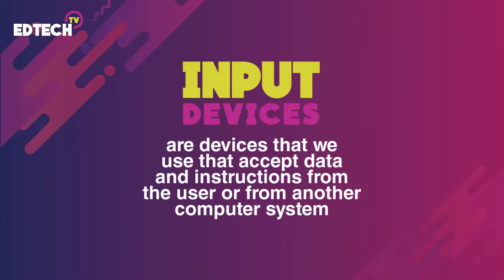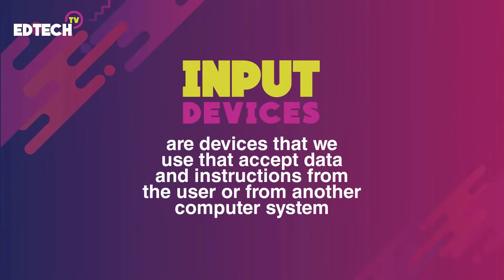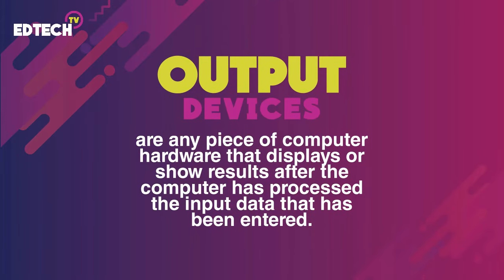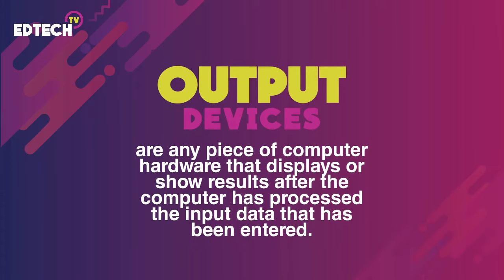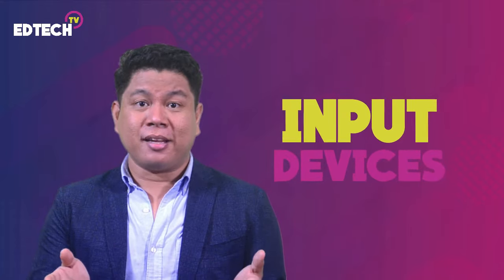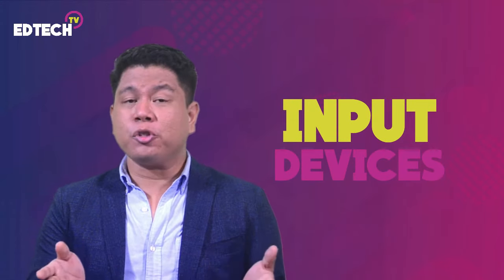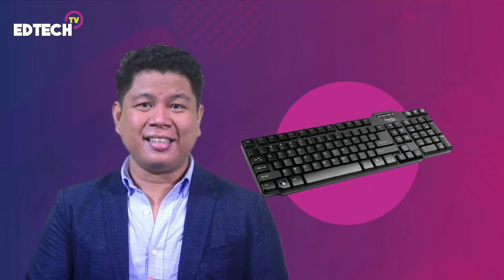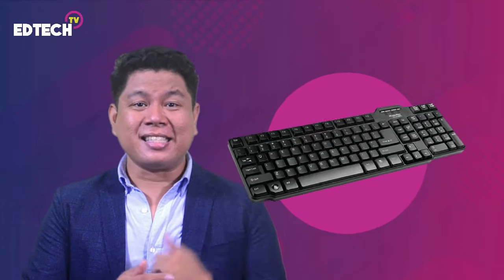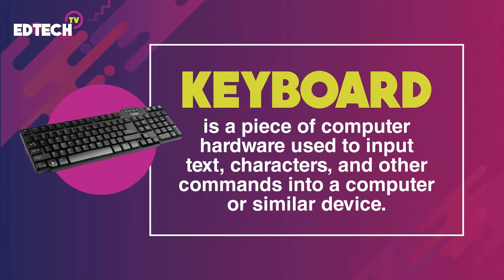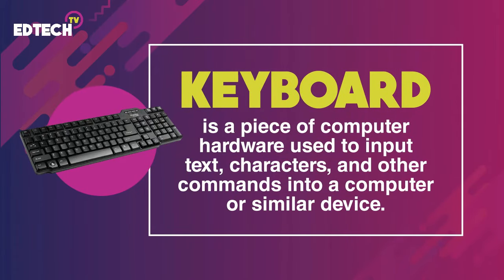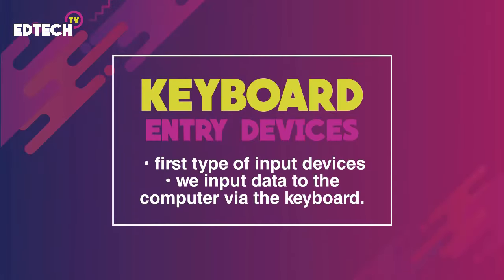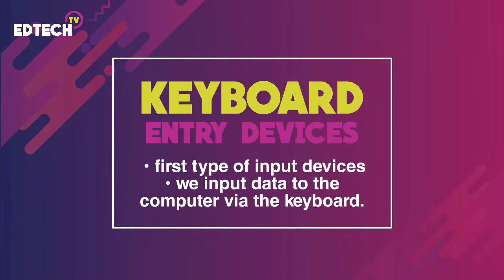Input devices are devices that accept data and instructions from the user or from another computer system, while output devices are any piece of computer hardware that displays or shows results after the computer has processed the input data that has been entered. Let us first tackle input devices. There are two types of input devices. The first one is used to enter or input data using the keyboard. A keyboard is a piece of computer hardware used to input text, characters, and other commands into a computer or similar device. That's the first type of input devices: keyboard entry, which means we input data to the computer via the keyboard.